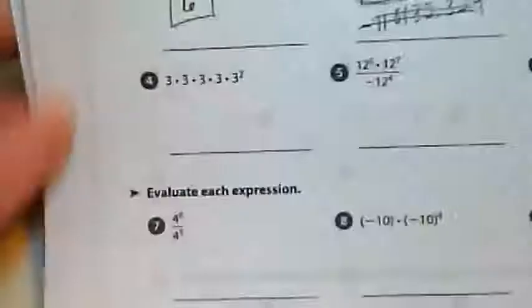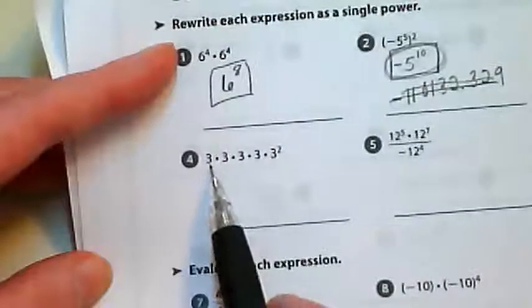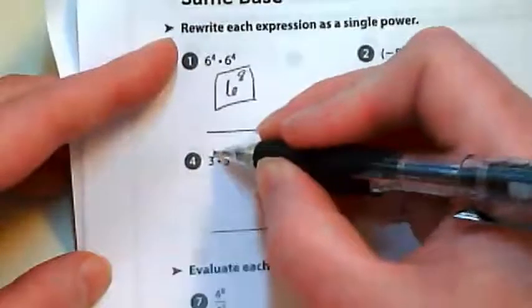So they get a little bit more complex as things go along. I just want to remind you with this one here, anytime we don't see an exponent, there is an exponent of one.